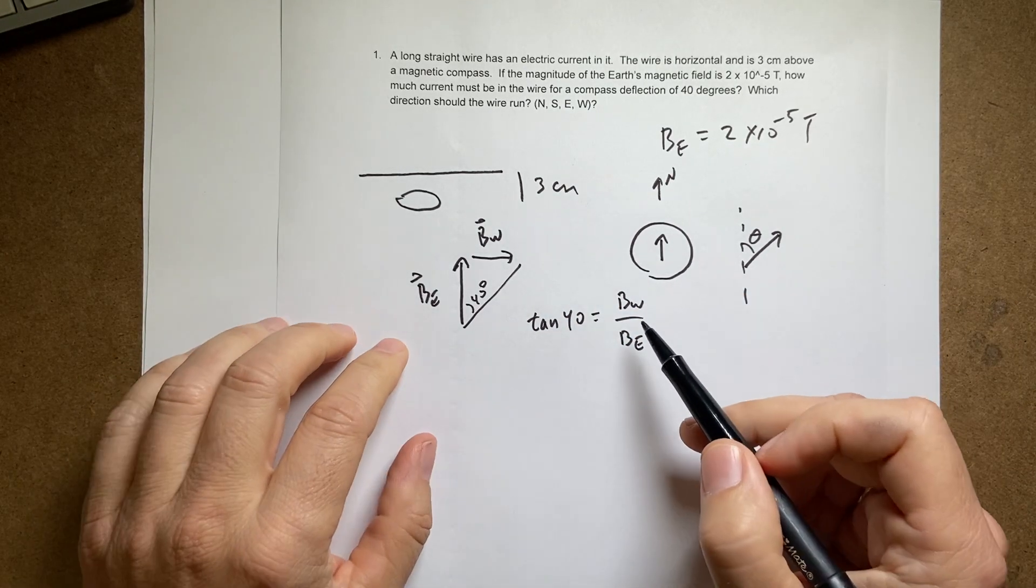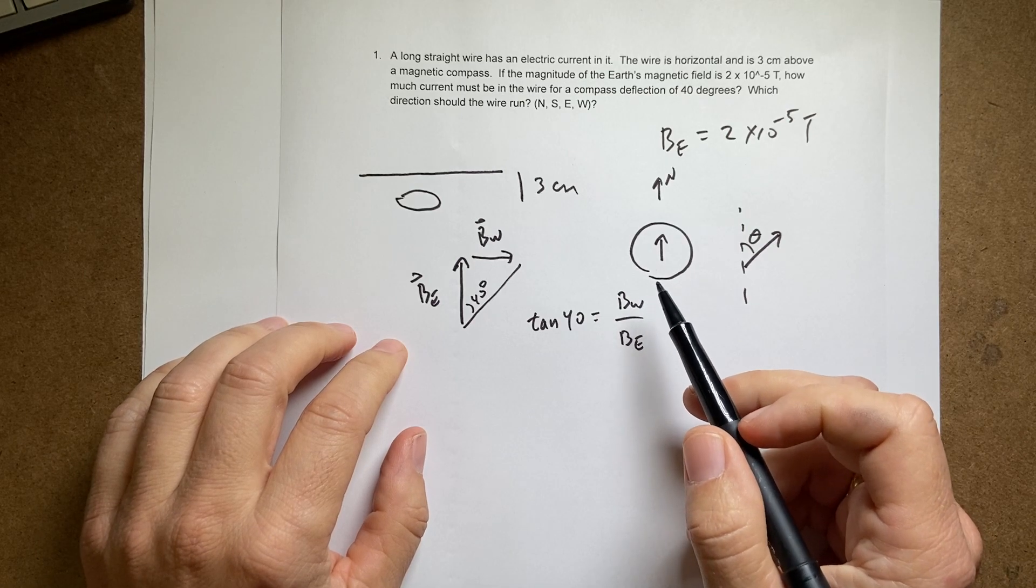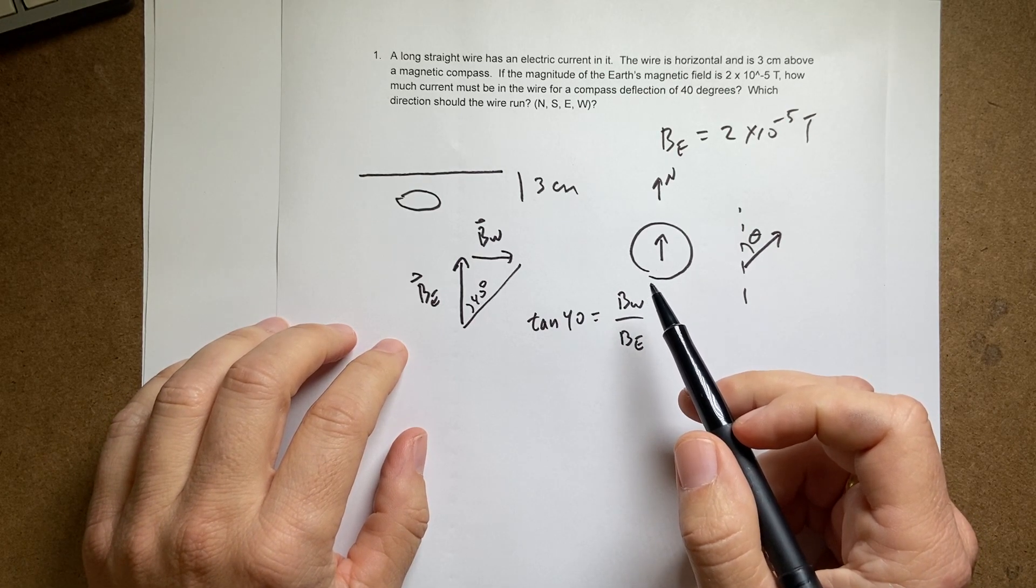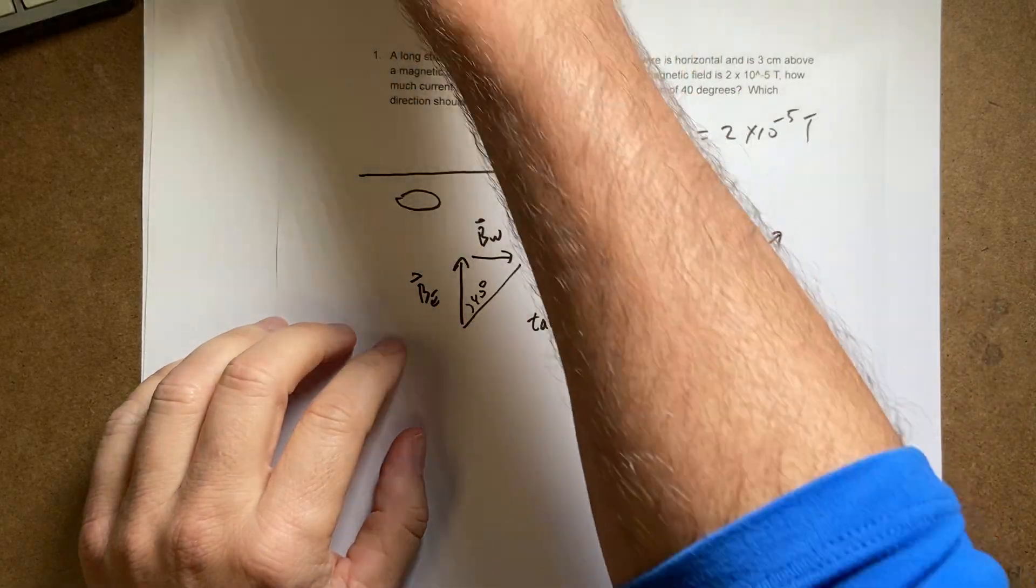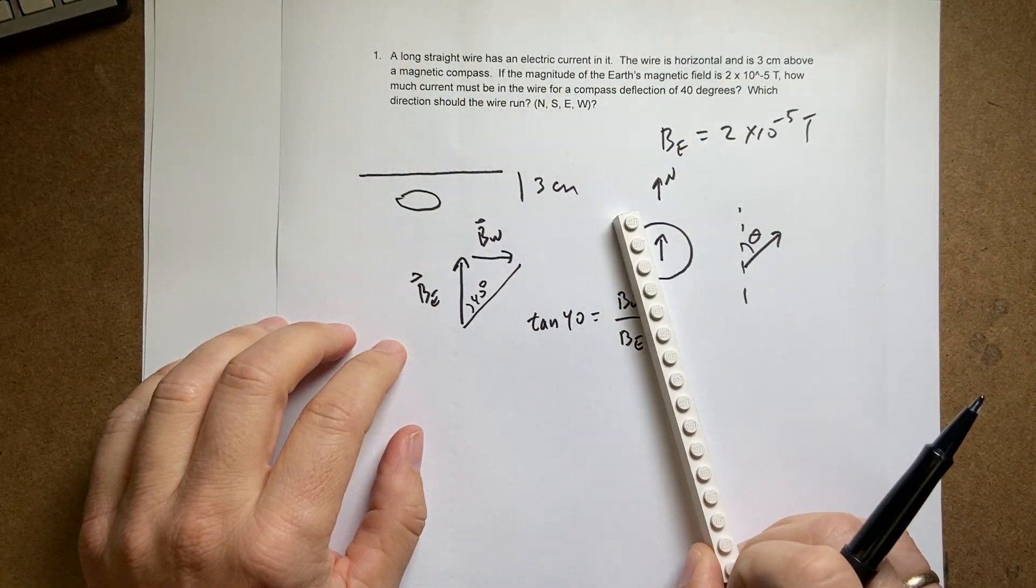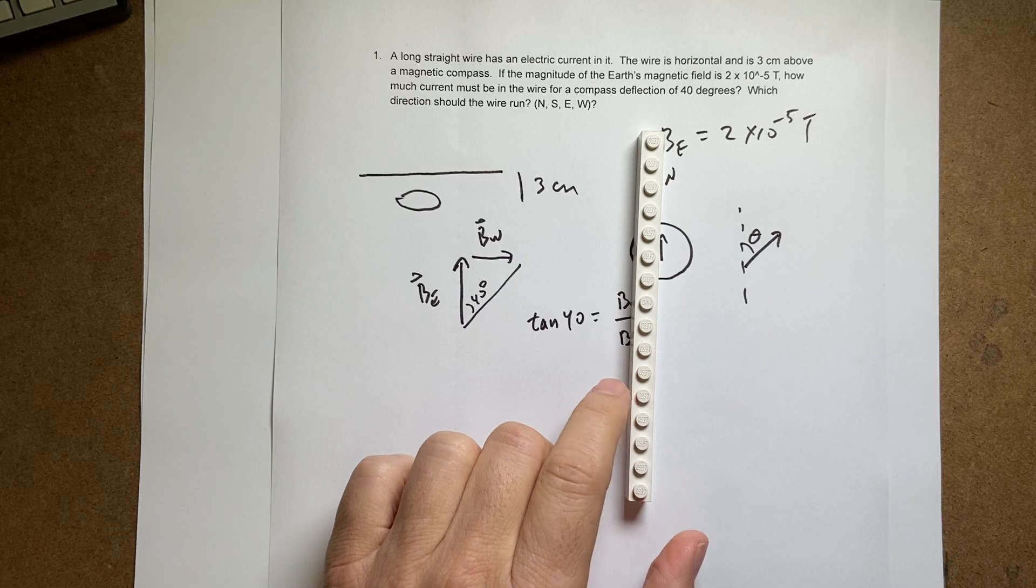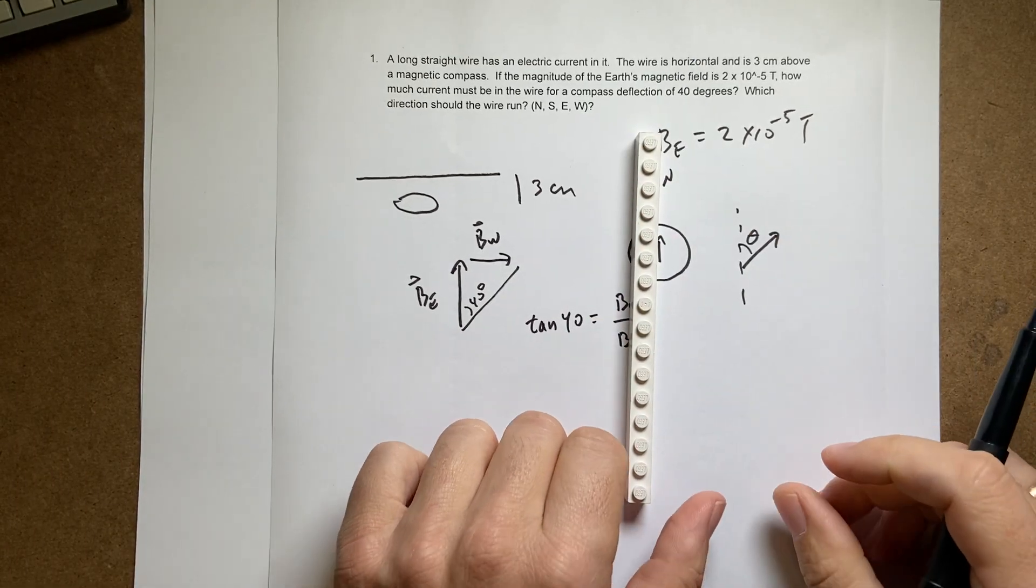Okay. So that's the first thing. And the second thing is what's the direction of the magnetic field of the wire. Okay. So here's, I can use this as my wire. And that's north.